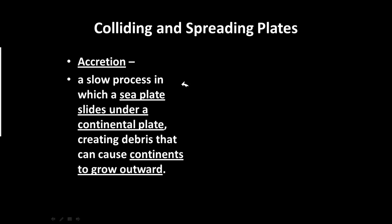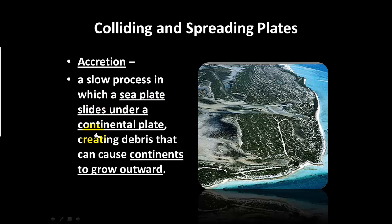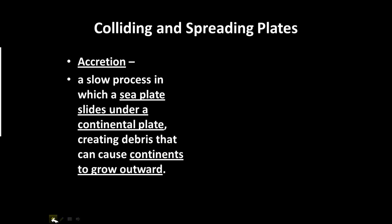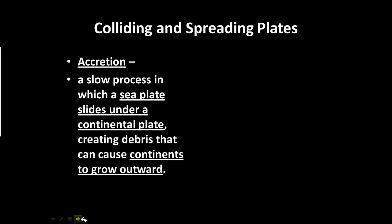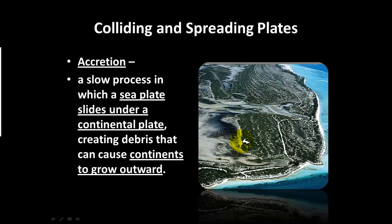Accretion is very similar to subduction. It's the process in which a sea plate slides underneath the continental plate, but instead of creating a mountain, it creates debris or waste that causes the continents to grow outward. The difference between accretion and subduction is that both involve sea plates shifting under continental plates, but with subduction mountains are created, while with accretion the continents grow or spread outward.